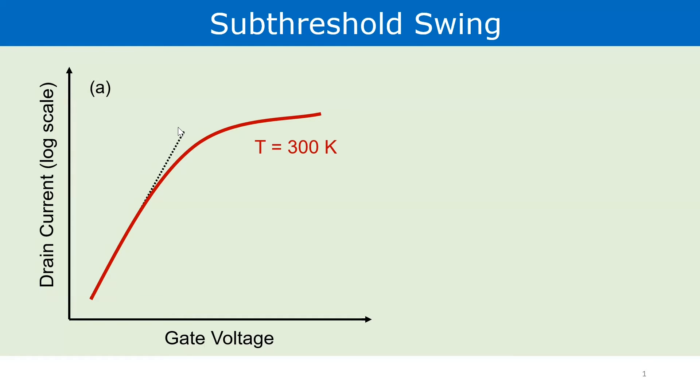For higher gate voltages, we enter the saturation or linear regime and that's why we see a deviation from the dotted straight line. Now what is subthreshold swing? Well, if we want to increase the drain current by a factor of 10, then how much increase in the gate voltage do we require?